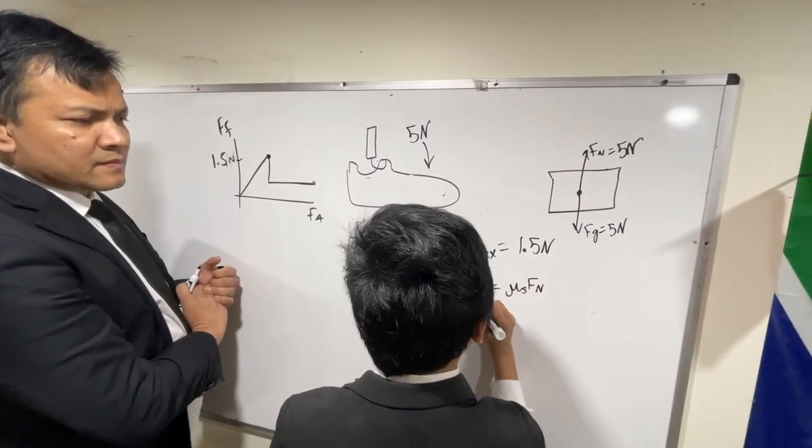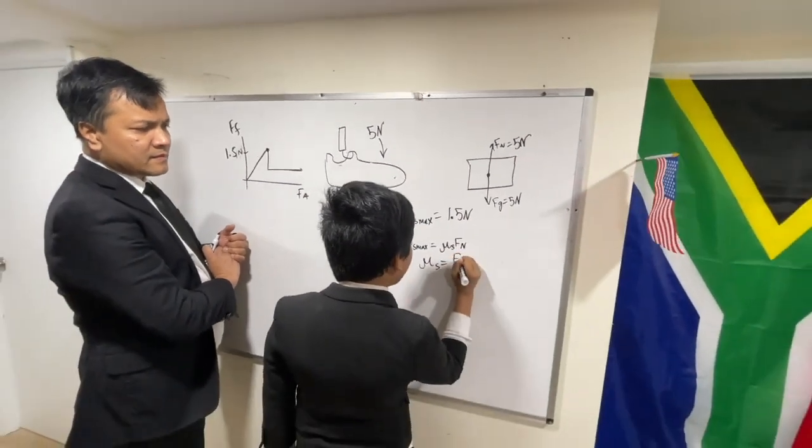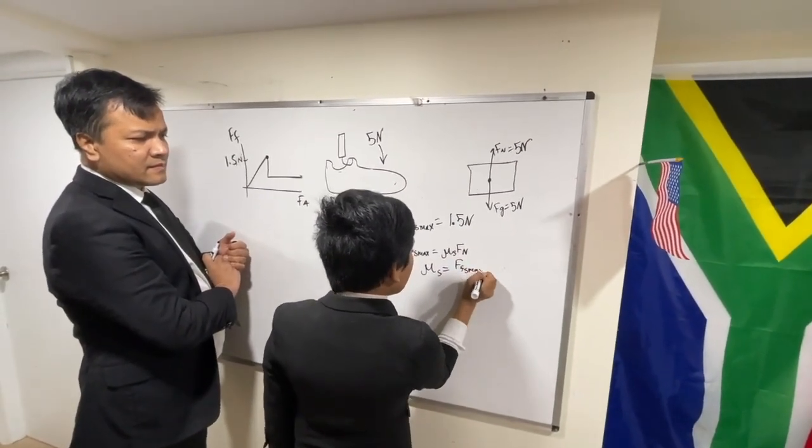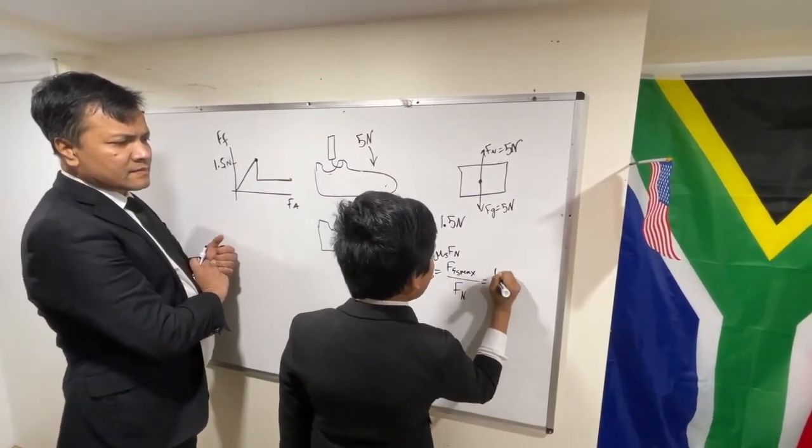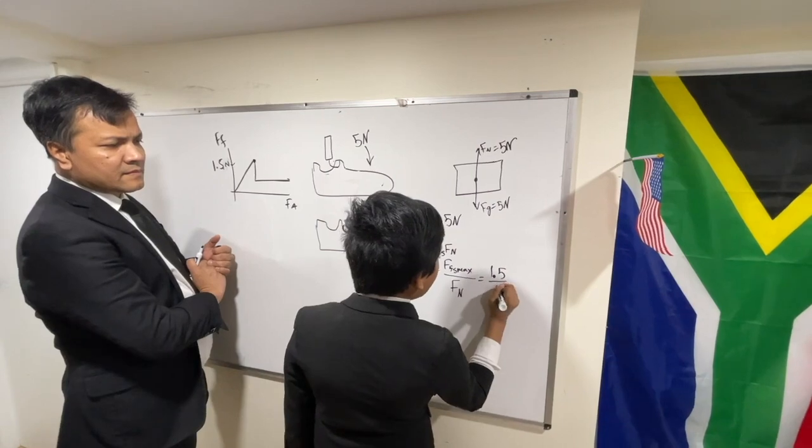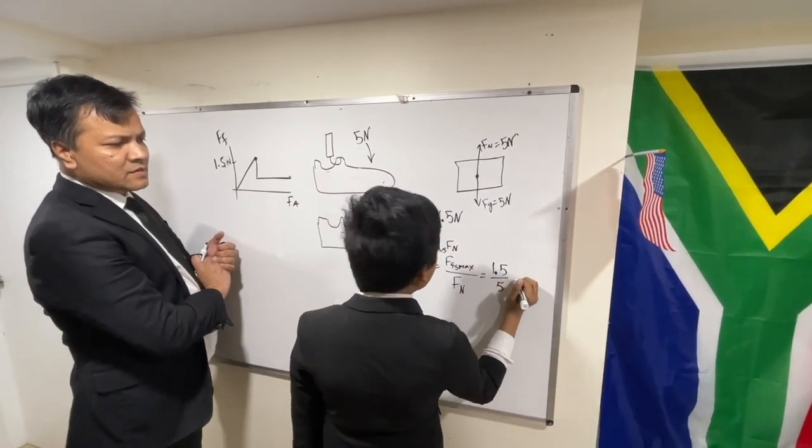Now solving for μs, we get μs = FFmax/Fn. Getting our data, we find that it is 1.5/5, which is also...